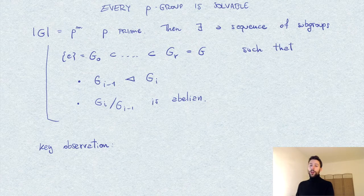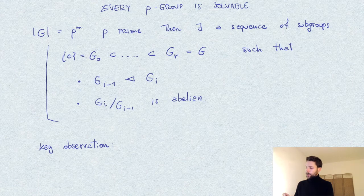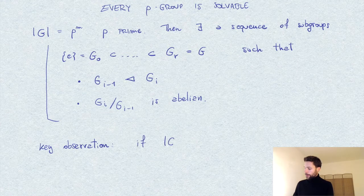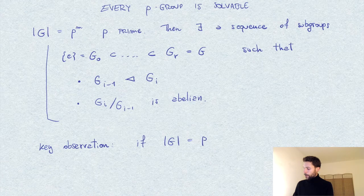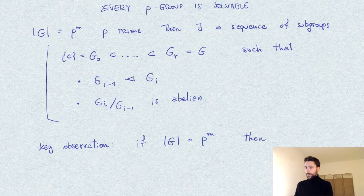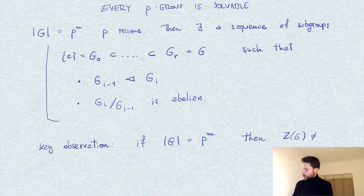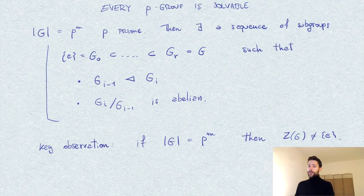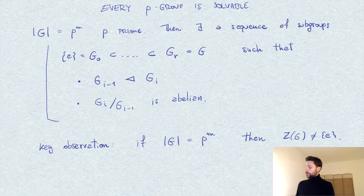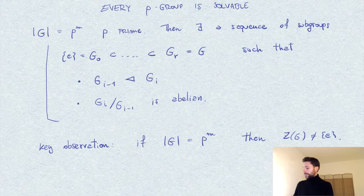So the algorithm is based on the following basic observation: we look at the center. We construct the sequence by consecutive centers, and the basic observation is that in our case, whenever we have the order of a group which is a power of a prime, then the center is not trivial. The reason is basically that p has to divide the order of the center, and therefore the center is not trivial.